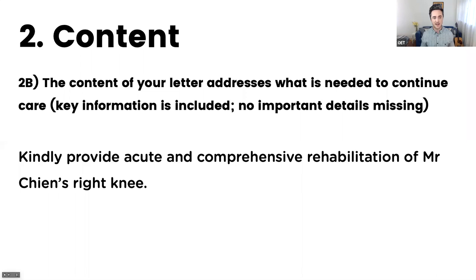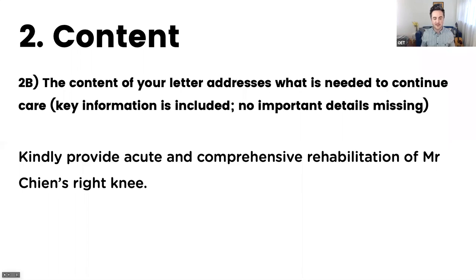Content 2B: the content of your letter addresses what is needed to continue care. You will most likely — if not always — have a request paragraph at the end. The request paragraph is going to ask the reader of your letter to do something. In this case, it says: 'Kindly provide acute and comprehensive rehabilitation of Mr. Chien's right knee.' This is the only request that needed to be made of this physiotherapist.